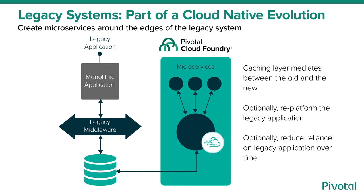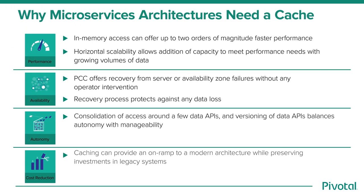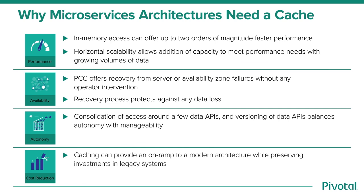In summary, Pivotal Cloud Cache's in-memory technology can offer up to two orders of magnitude faster performance than disk. Cloud Cache's horizontal scalability allows addition of capacity to meet performance needs with growing volumes of data. Pivotal Cloud Cache offers recovery from server or availability zone failures without any operator intervention, protecting against any data loss. It increases team autonomy by providing a way to create team-specific views of data based on versioned APIs, as an alternative to making changes that require coordination across all teams. And Pivotal Cloud Cache provides an easier way to scale or modify brittle and expensive backing stores, offering an on-ramp to a modern architecture.